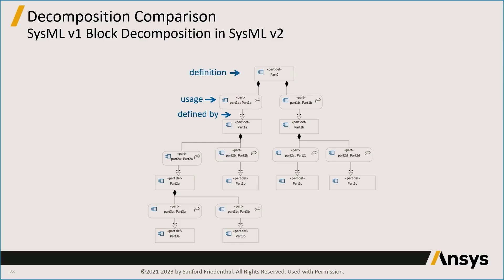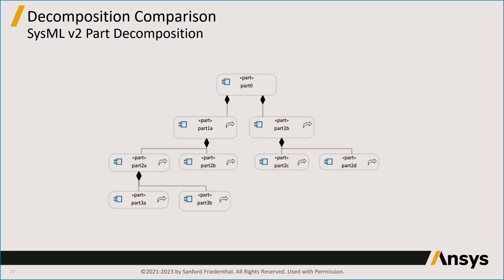In SysMLv2, however, we can avoid that block-to-part-to-block-to-part stair-stepping and just create a straightforward part hierarchy. Part 0 is at the top; part 1a and part 1b are beneath it. Part 1a is composed of parts 2a and 2b, and part 2a is composed of parts 3a and 3b — a straight part hierarchy with no stair-stepping. It's much more straightforward and simple to understand and work with.